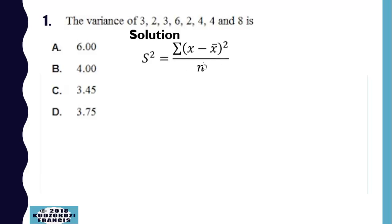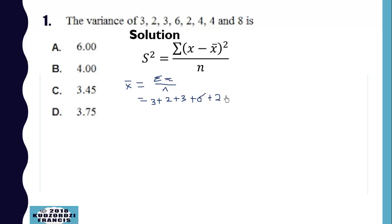Term 2018, the first question is on variance. This is how we find the variance using this formula. Let's determine the mean, which is sigma x over n, so we sum all these: 3 plus 2 plus 3 plus 6 plus 2 plus 4 plus 4 plus 8, all over 8, so this is 32 over 8.